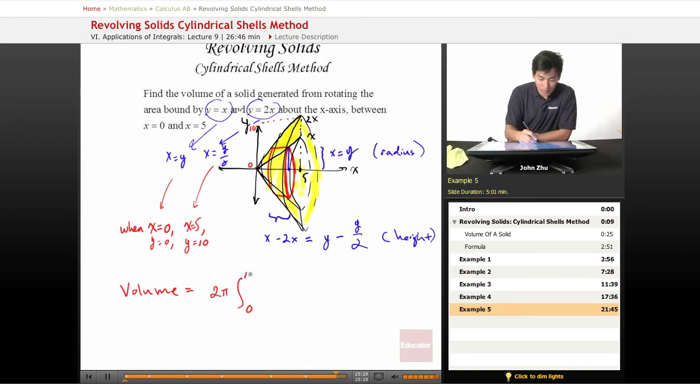Okay, so 0 to 10. So always remember to flip your x and y's if you're going to integrate in terms of the different variable, the other variable. So we have 2 pi times our radius, which is y, times our height, which is y minus y over 2 dy.